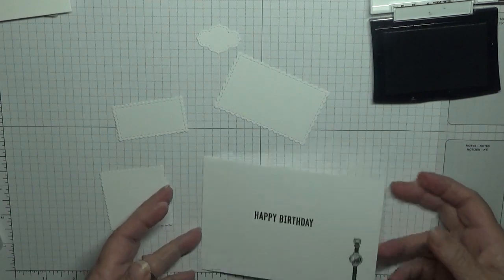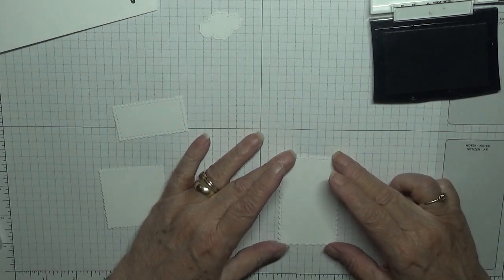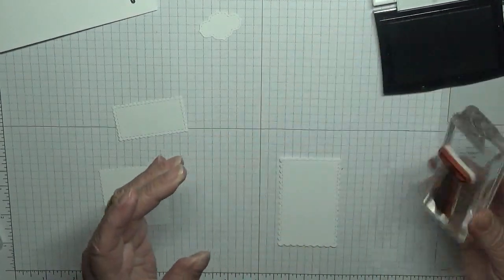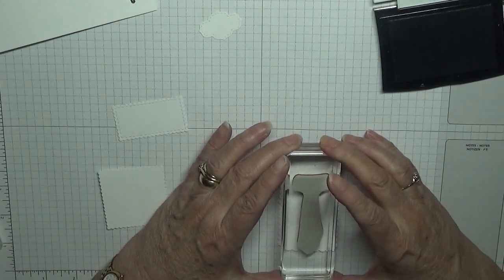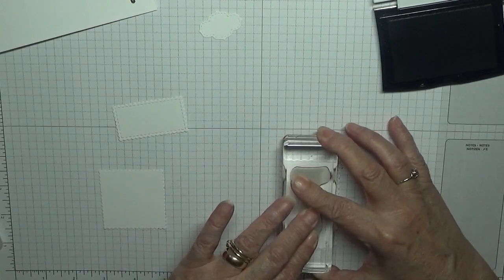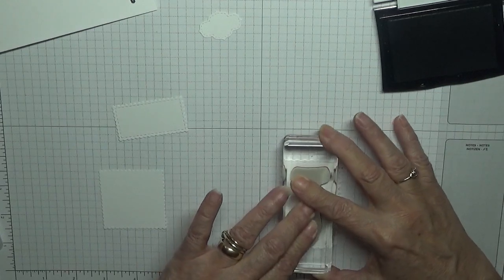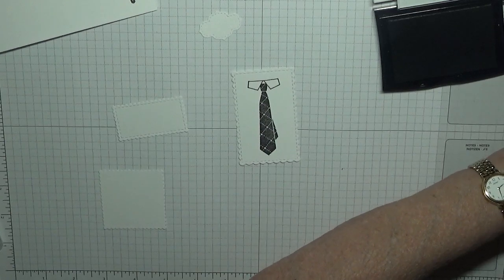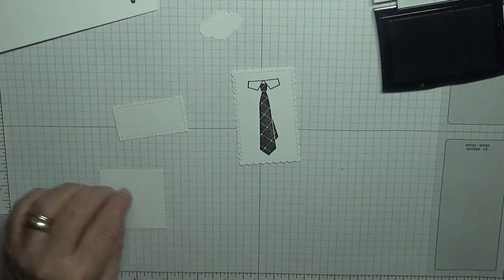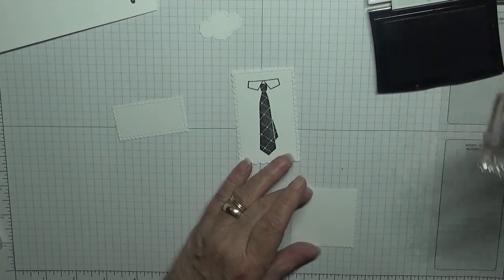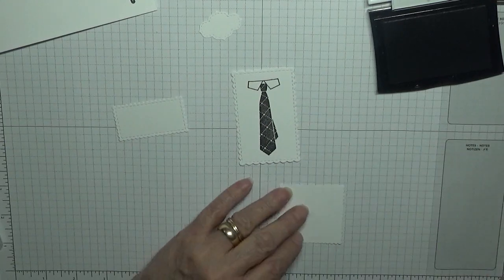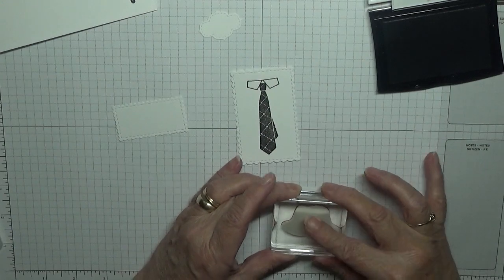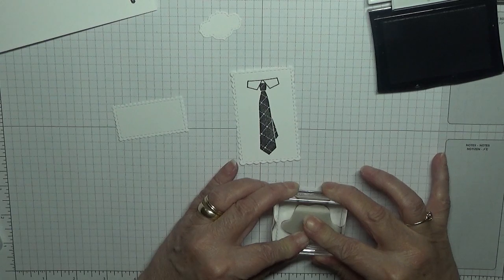I'm going to stamp the tie on this one. It's quite a big stamp for what it is. Plenty of ink on it, and I'm going to stamp that in the middle. Nice. And this square one, I'll stamp the hat in the middle.